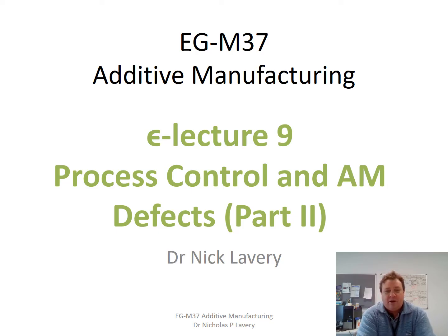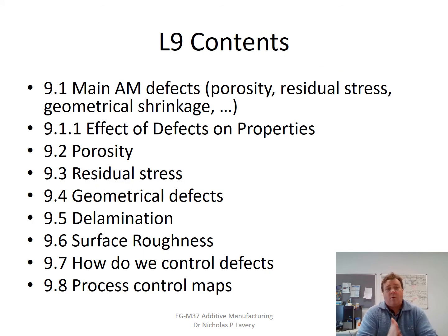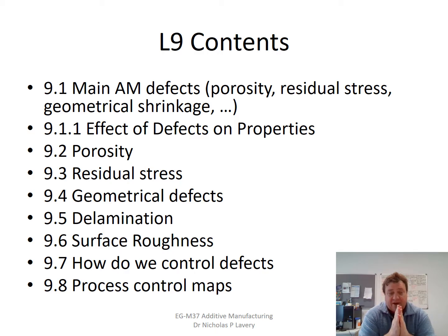Hello and welcome to E-Lecture 9 for the EGM 37 Additive Manufacturing course. We're going to continue with the chapter on Process Control and Additive Manufacturing Defects — this is the second part following on from Lecture 8. We're going to talk about the main additive manufacturing defects: porosity, residual stress, geometrical shrinkage, and others, and look at the effects of these defects on material properties.